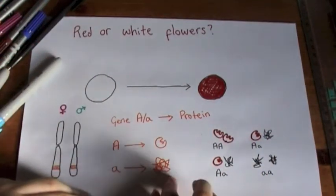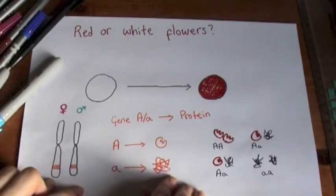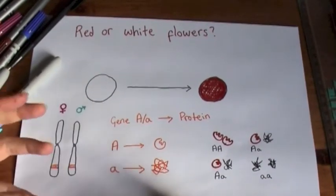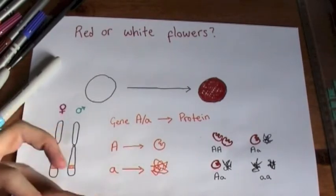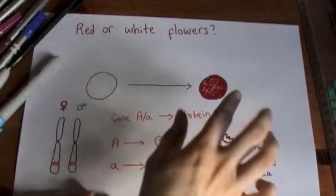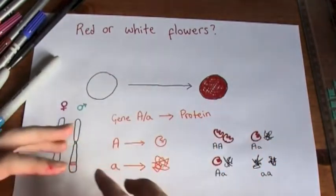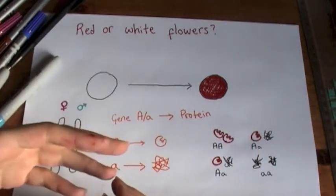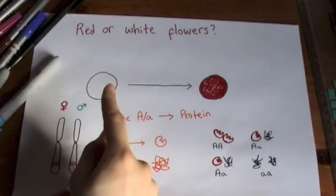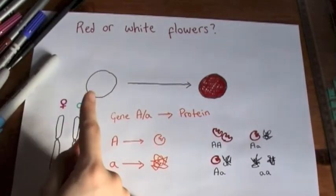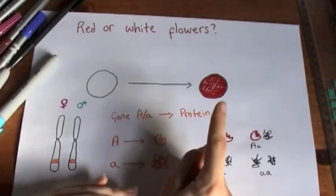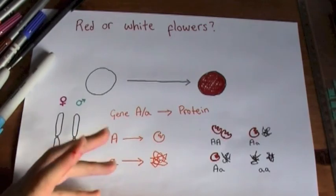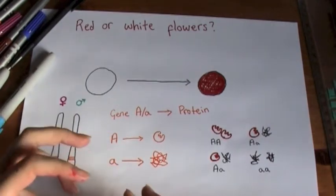Whereas if we get two copies, so say our maternal and our paternal ones both had the recessive copy, then we have no functional protein, we just have a mess. So there's no protein available to turn this molecule into this red one. So this gene, big A, little a, codes for an enzyme which converts colorless molecule into a red pigment. And then depending on whether the protein is functional or non-functional is whether we get that phenotype.